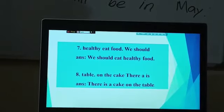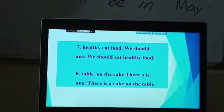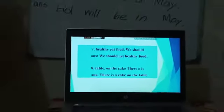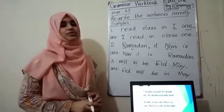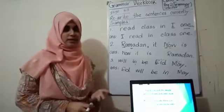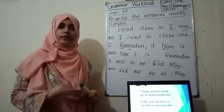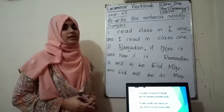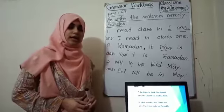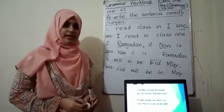Number 8: 'Table full stop on the cake there is.' 'T' is capital, so 'There' goes at the beginning — 'There is a cake on the table.' These are the examples in page number 63 and we have already solved them. So on page number 64 there are some other exercises. Please do the homework and practice it well, so that in the exam hall we can do it correctly, inshallah.